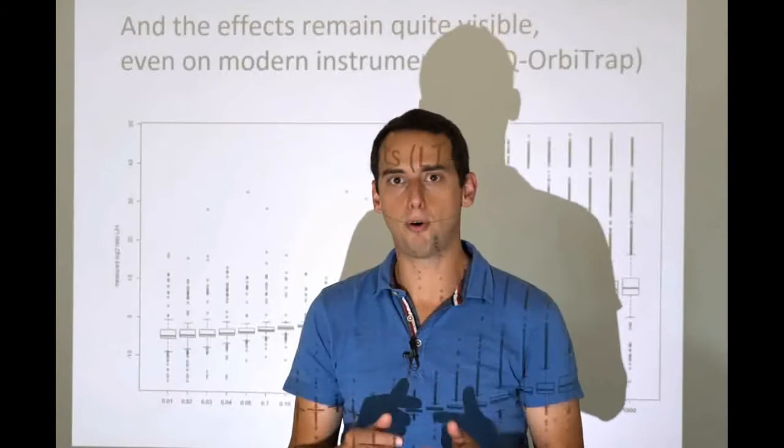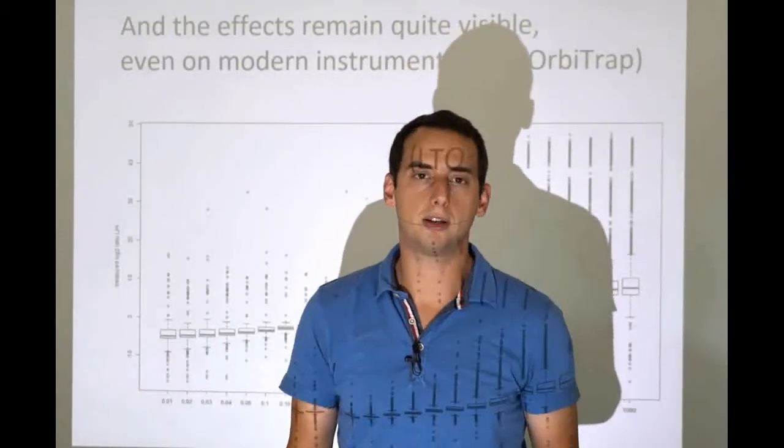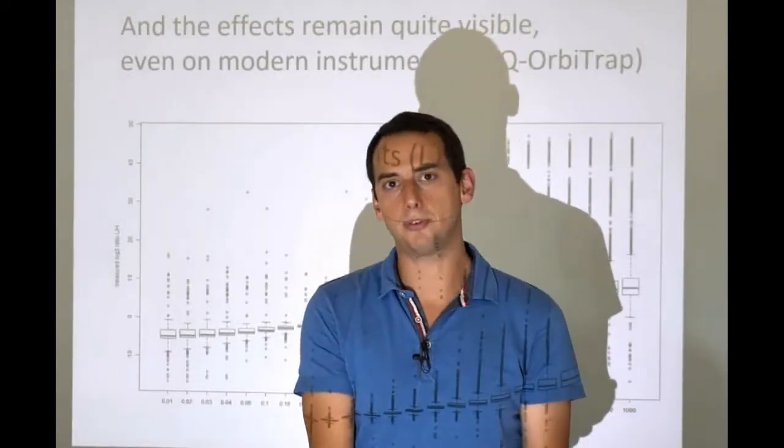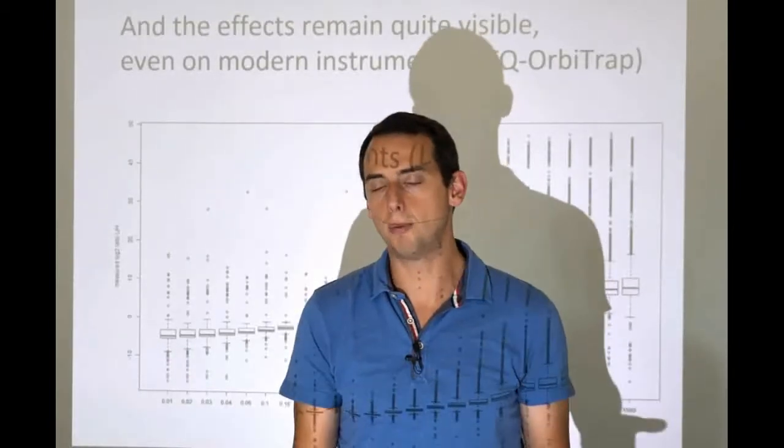because we do need to know roughly at what concentration a certain peptide or protein should be in a sample before we can match the spike in. So of course you cannot do that.